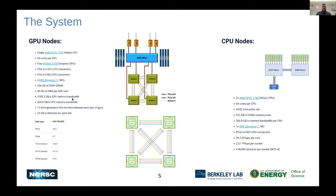One of the important things about the GPUs is that that memory comes with very high bandwidth — close to 1,600 gigabytes per second. Importantly, that bandwidth is much higher than what you get by moving data across the PCIe bus between the CPU and the GPUs.